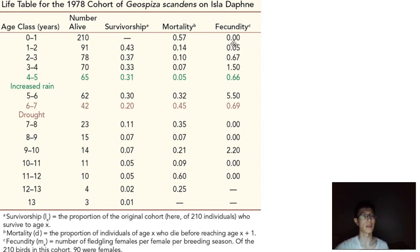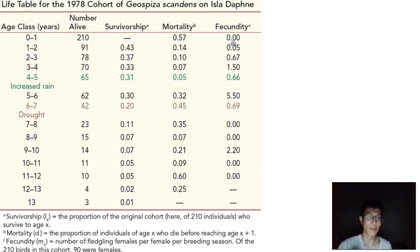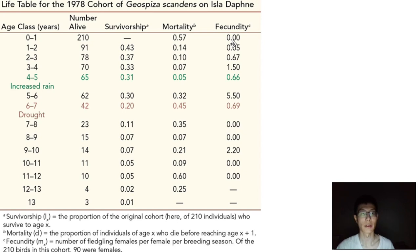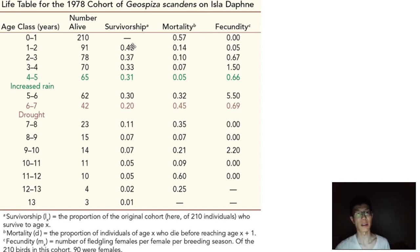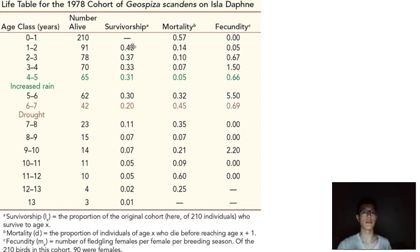Fecundity gets a little trickier because you're looking at the number of fledgling females per female per breeding season. You need to know how many females there were previously, how many originally, and how many actually survived — that gives you the fecundity of the entire cohort. But that's less important. In the scope of life tables, it's really survivorship and mortality that will probably require calculation on your part, and in all honesty, this topic generally doesn't require pulling out a calculator on exams.